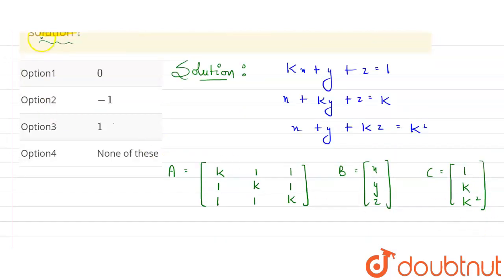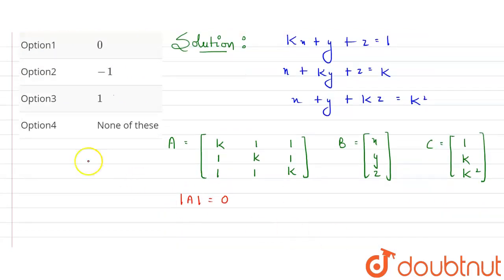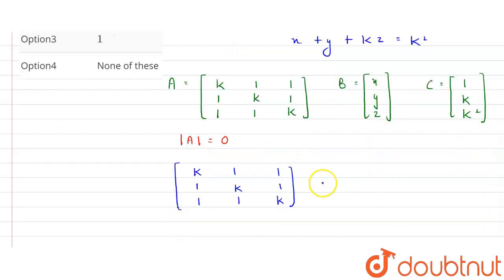No solution means the determinant of matrix A will be equal to zero. We have matrix A, so let's find the value of its determinant. Let me write the matrix again and compute det(A).